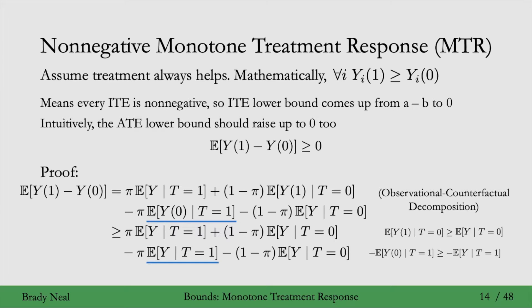And that's our lower bound. This term cancels with this term, and this term cancels with this term, to give us 0. The goal wasn't necessarily just to prove this lower bound of 0, which is a bit obvious from the reasoning above the proof. The goal is more to see how we connect these assumptions to bounding in these proofs, so that you can get your own bound and these bound derivations become something you can do yourself.